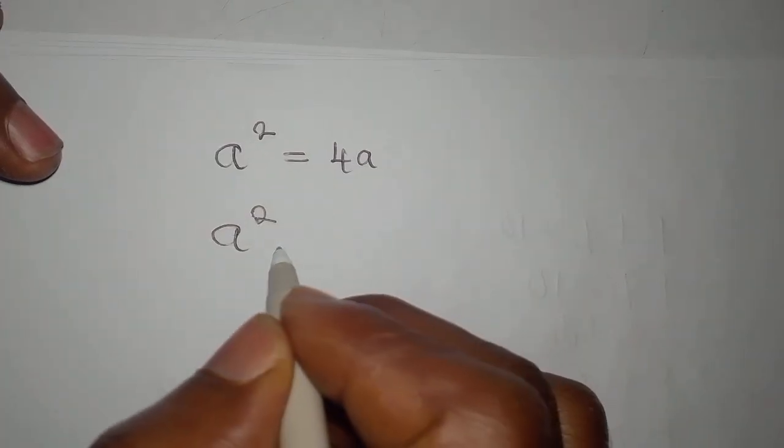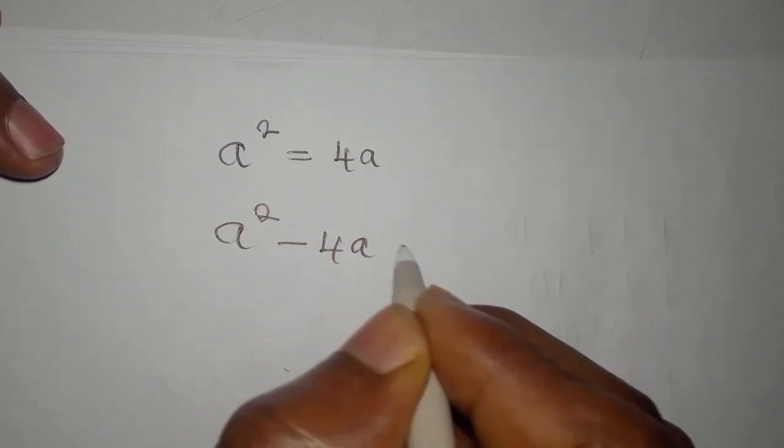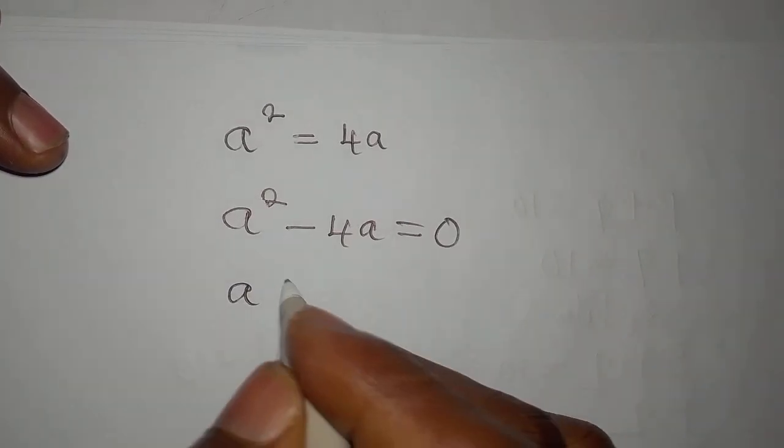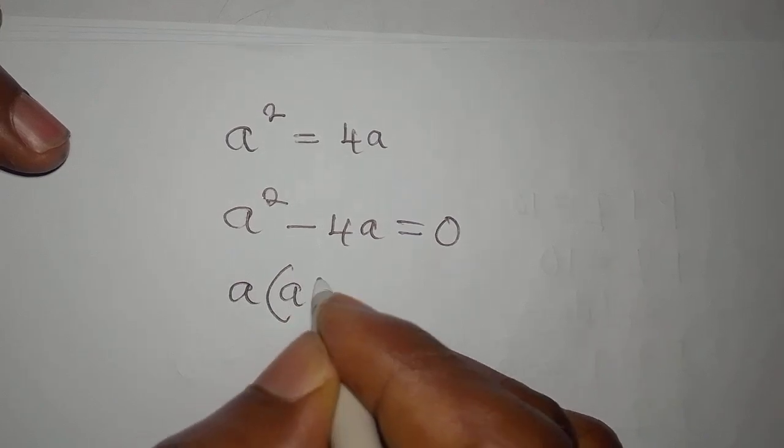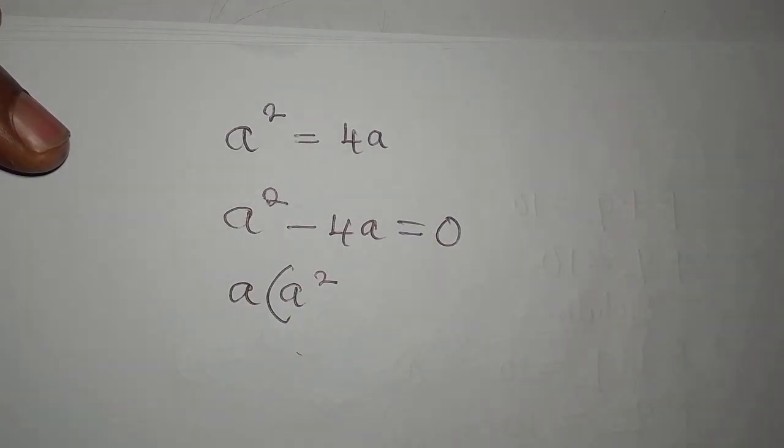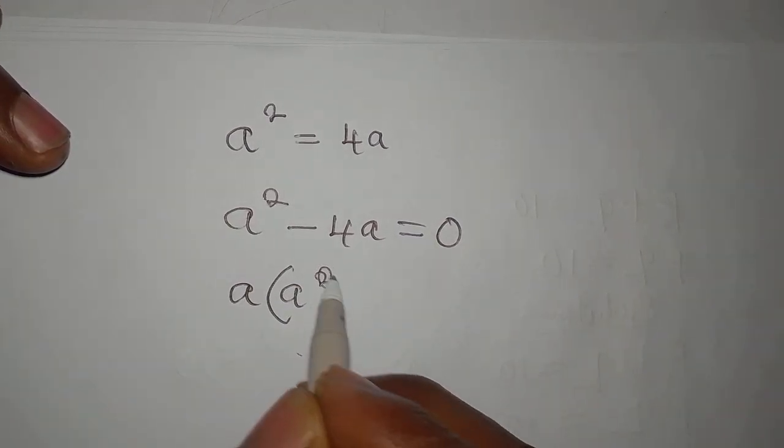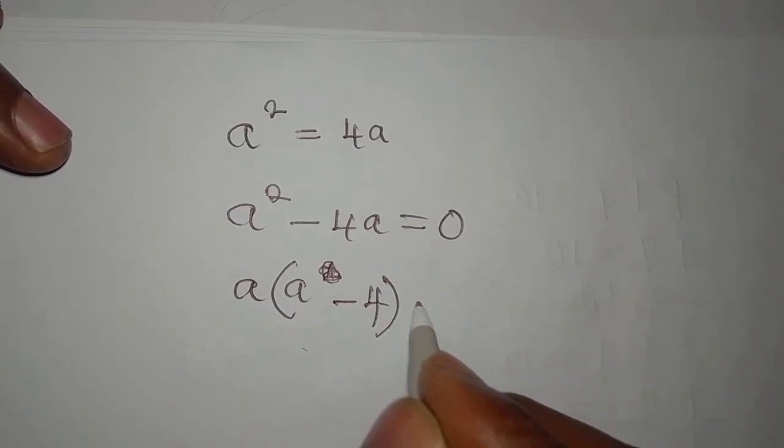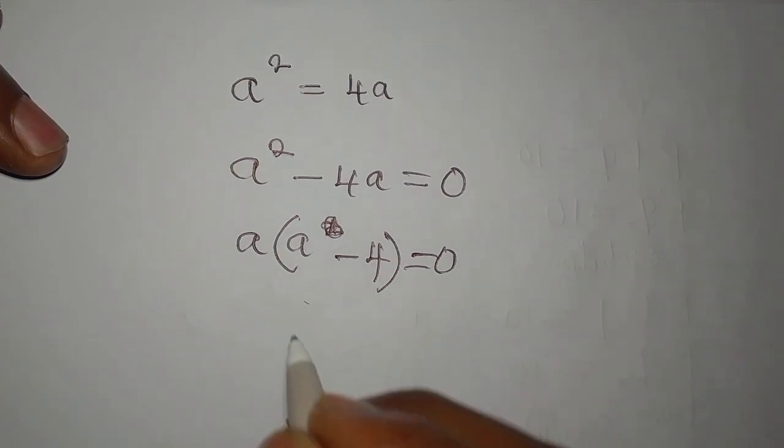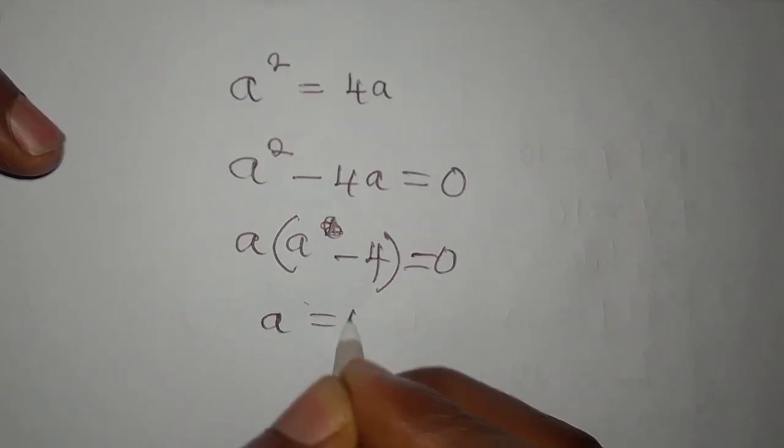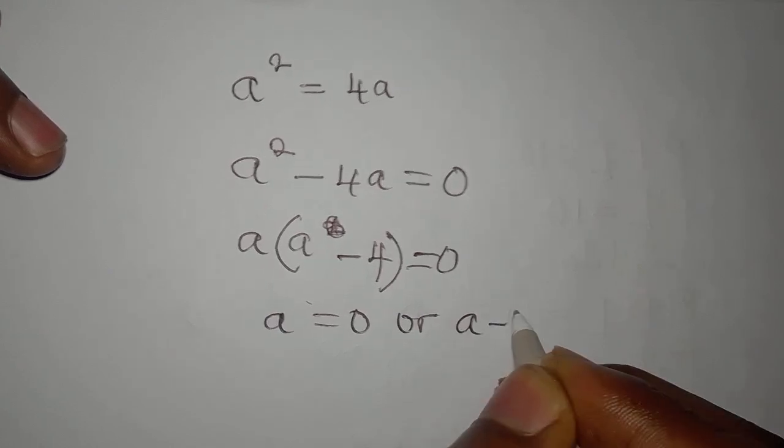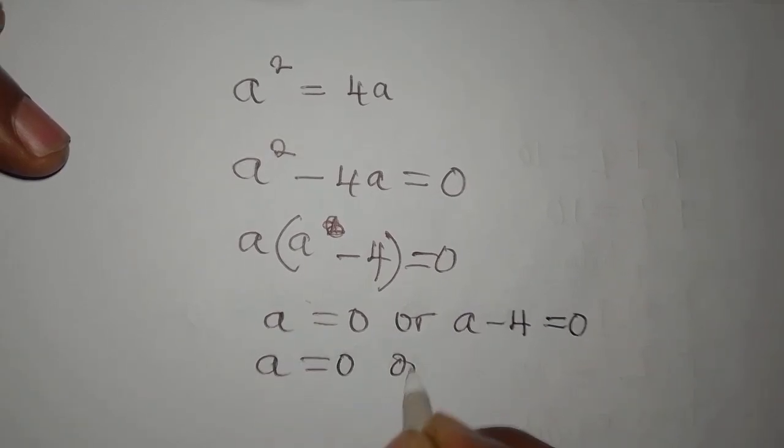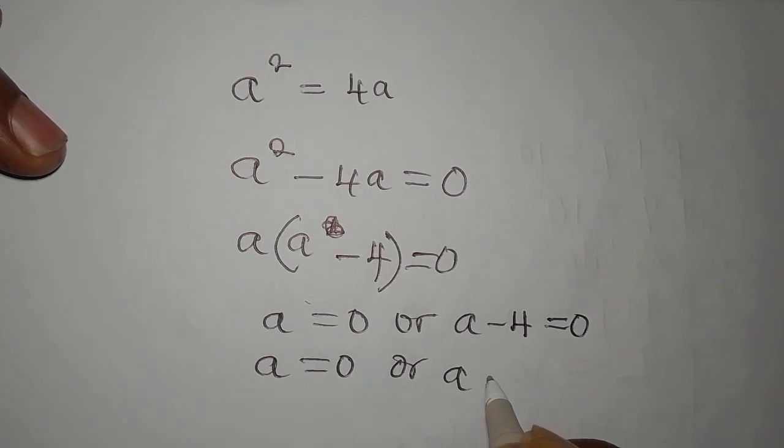So we have a squared minus 4a equals 0. Now a is a common factor, then here we have a squared—oh, 1 is already out—so you put a to the power of 1, then minus 4 equals 0. So it is either a is zero or a minus 4 is zero.